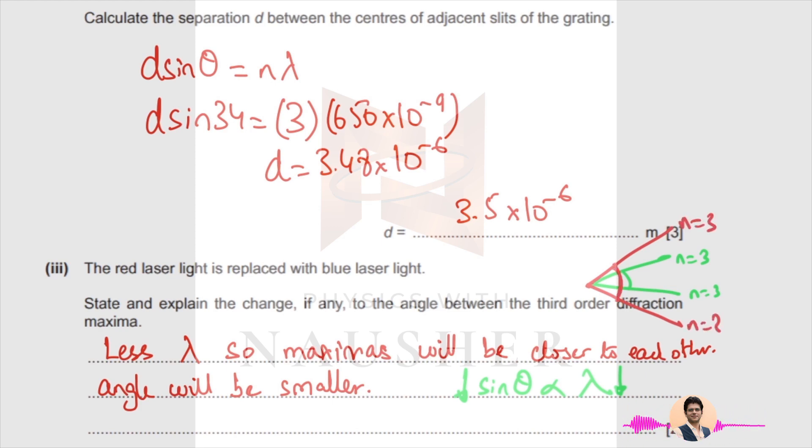For third order, red will be further out and blue will be less spaced out because the wavelength is smaller. So this angle is going to be smaller.